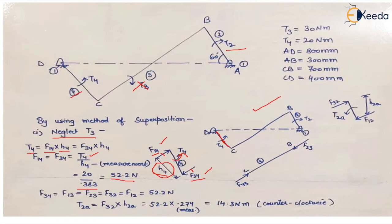Now we come to body number 3, or link 3. At the joint there were two action-reaction forces — one acting on body 4 and the other acting on body 3. This is the reaction on body 3 due to body 4, written as F43. Because this body does not have any external force and is connected to two links at two different points, it becomes a two-force member. So F43 = −F23. The forces are equal in magnitude but opposite in direction.